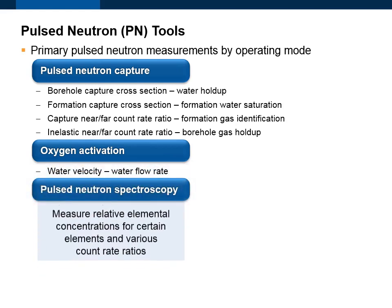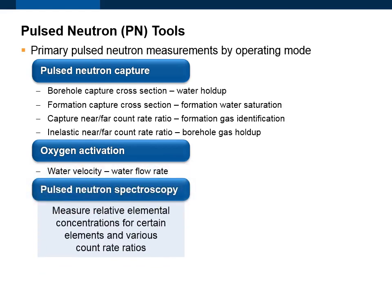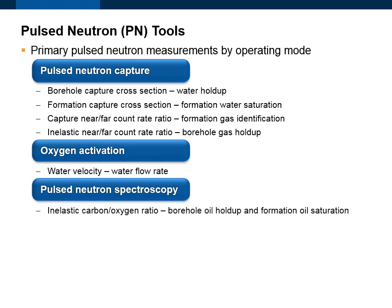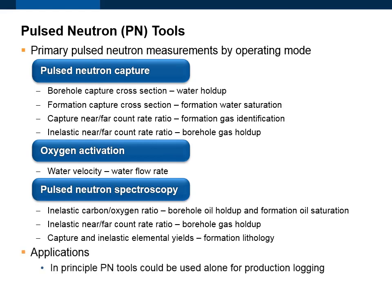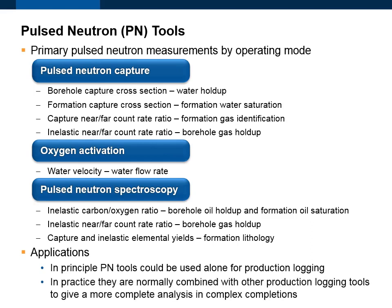Pulse Neutron Spectroscopy tools measure relative elemental concentrations for certain elements and various count rate ratios. The inelastic carbon-to-oxygen ratio is used for borehole oil holdup and formation oil saturation — it is several times more sensitive to oil in the completion than to oil in the formation. The inelastic near-to-far count rate ratio is used to calculate borehole gas holdup. The capture and inelastic elemental yields can be used to determine formation lithology. In principle, pulse neutron tools could be used alone for production logging; in practice, they are normally combined with other production logging tools to give a more complete analysis in complex completions.